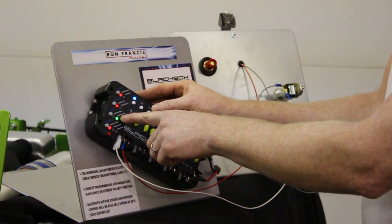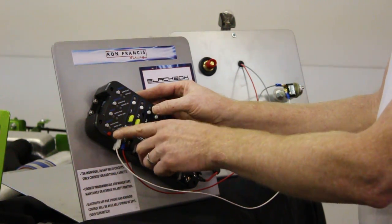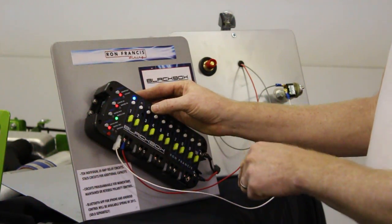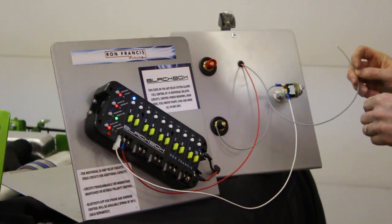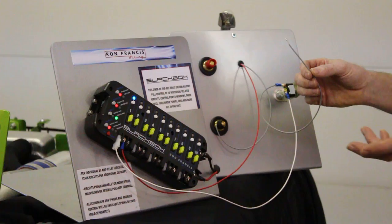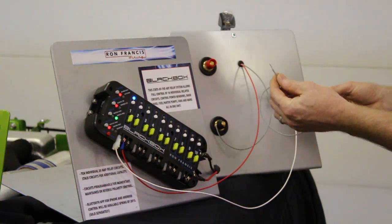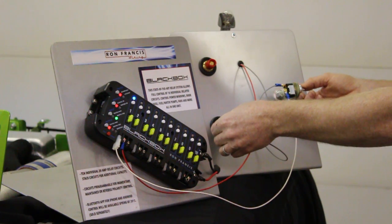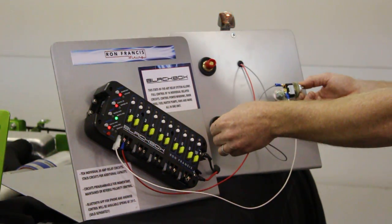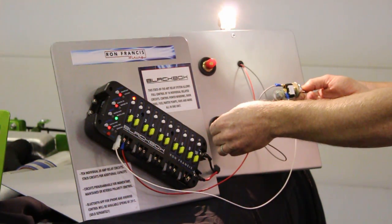On the input, we have it on switched ground. And then on the output, we have switched power. So right now how it's set up is when we ground the trigger, we'll have action on the relay. So if I put this other wire on the toggle switch to ground and I activate the toggle switch, we have the light.